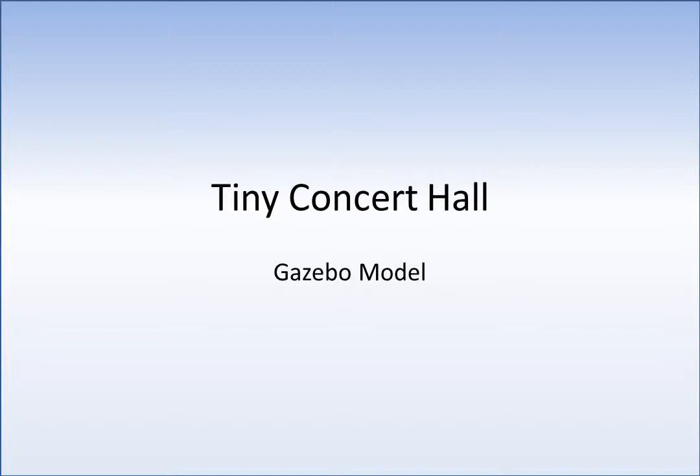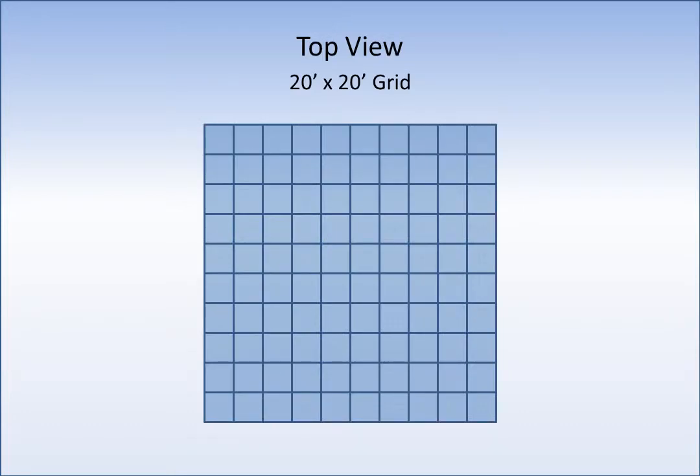We'll look at an octagonal gazebo as an alternative to the yurt. Let's start with a 20 foot by 20 foot grid, similar to the yurt.